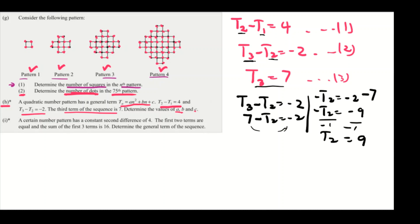And then you want to find T₁, so it's going to be T₂ minus T₁ equals 4, which is what you're given here. T₂ we found, 9, so it's 9 minus T₁ equals 4. Transpose the nine to the other side. You'll have -T₁ equals 4 minus 9, -T₁ equals -5. Divide by negative both sides. T₁ equals 5.